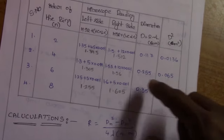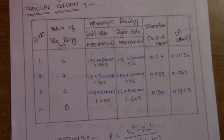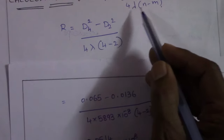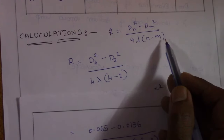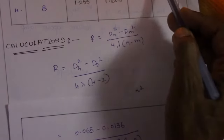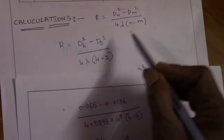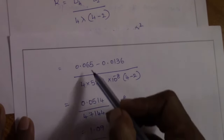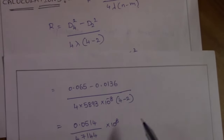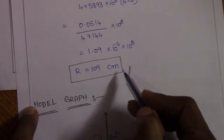Here you can see the accurate values already taken, with D squared values for the 2nd, 4th, 6th, and 8th order rings. The formula for radius of curvature is R equals D_n squared minus D_m squared, divided by 4 lambda into (n minus m). Substituting: R equals D_4 squared (0.065) minus D_2 squared (0.0136), divided by 4 into 5893 into 10⁻⁸ centimeters into (4 minus 2). After calculation, R equals 109 centimeters. This completes the Newton's Rings experiment for the radius of curvature of the plano-convex lens. Thank you.